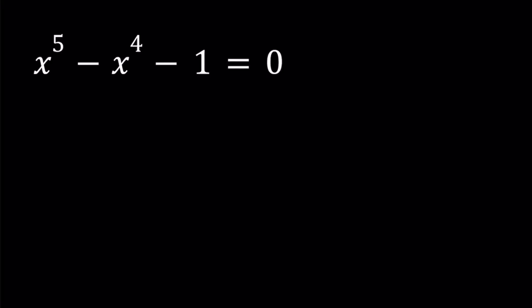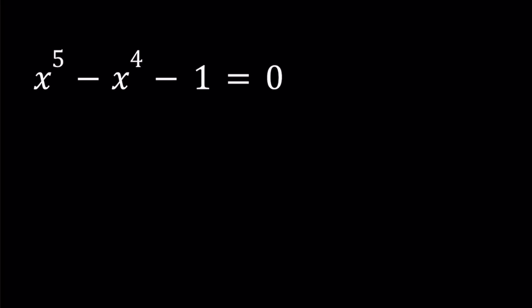Hello everyone. In this video, we're going to be solving a quintic equation. We have x to the fifth power minus x to the fourth power minus one equals zero, and we're going to be finding the solutions for this equation. I'll be presenting two methods. Let's start with the first one.